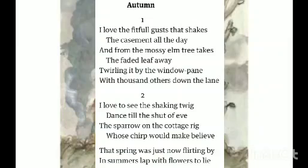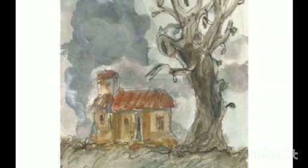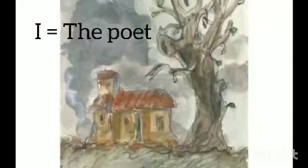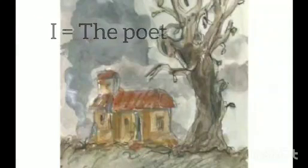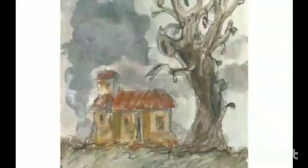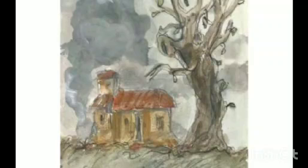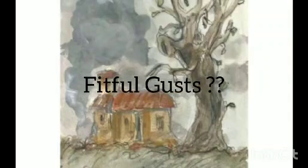Look at the first line of the poem: 'I love the fateful gust.' Dear student, you can easily understand that the pronoun 'I' is here actually the poet himself. The poem is written in first person. Here in the poem, the poet expresses love for the fateful gusts which is very common during the season of autumn.